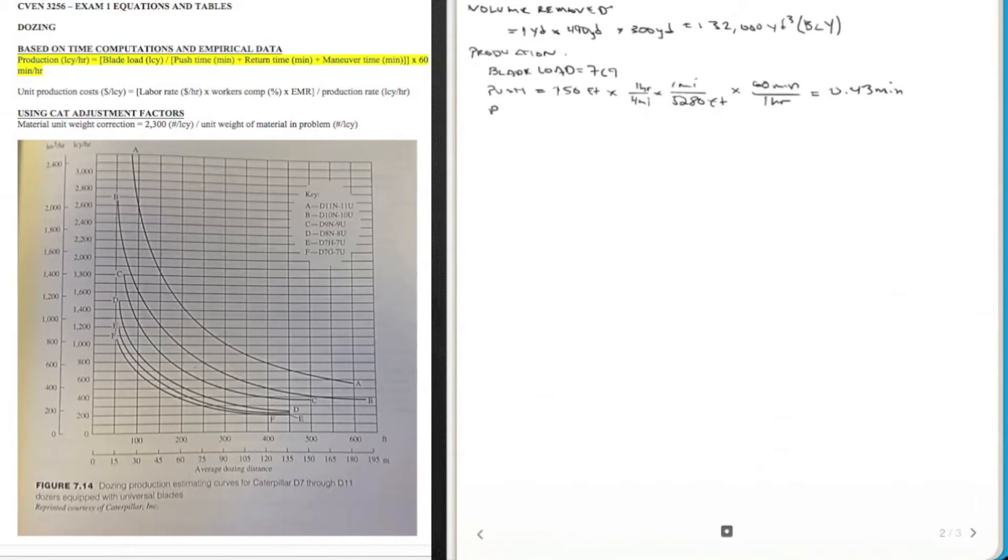Let's get the return time then. Using basically the same equation, we're going to stick with 150 feet. The only difference is instead of 4 miles an hour, we're going 6 miles an hour. 6 miles, same conversions, 1 mile is 5,280 feet, and 60 minutes per hour. We get 0.28 minutes, there's our return time.